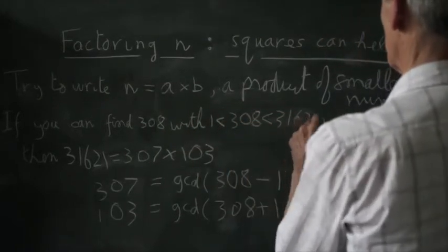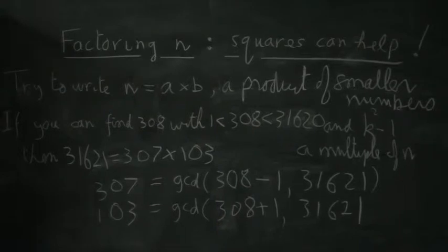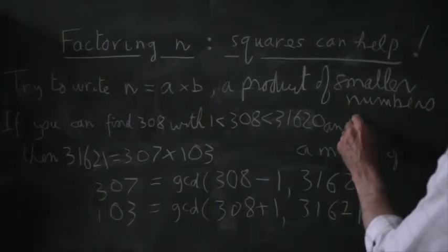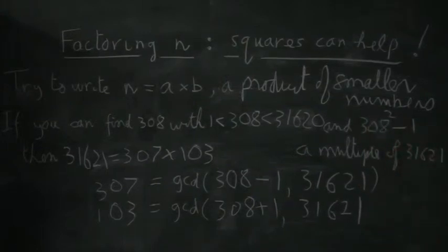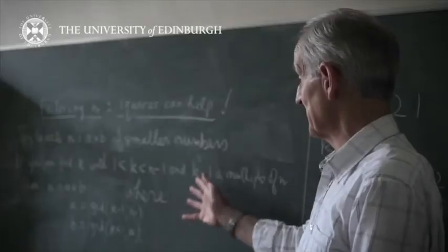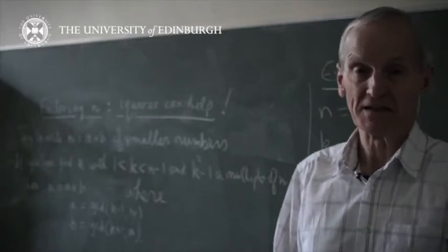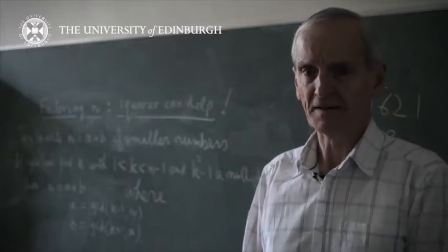One idea for factoring is to use square numbers. If you can find squares with the appropriate property, you can factorise very easily. But the difficulty is actually finding these squares. So let's take a look at these squares.